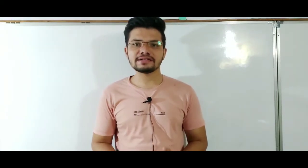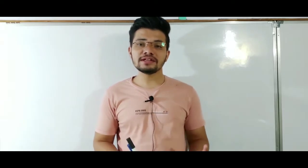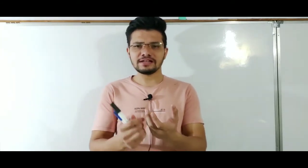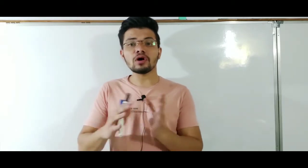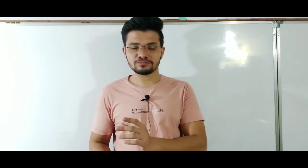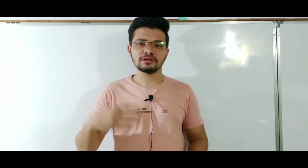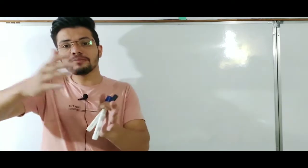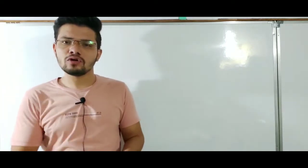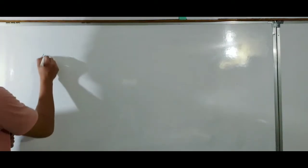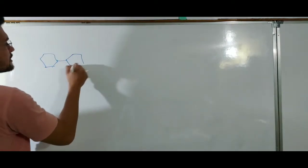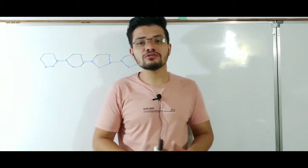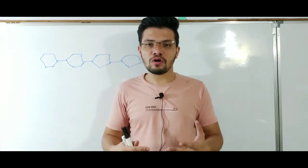Hello friends, we are learning carbohydrates and in this particular video we will discuss about polysaccharides. Polysaccharides, as the term suggests, are the polymers of small sugar units like glucose or galactose, or any monosaccharide molecule. These polysaccharides are chains of that single sugar unit — suppose there are so many sugar units joined together, up to 100 to 1000 molecules of sugar units joined to form a polysaccharide.